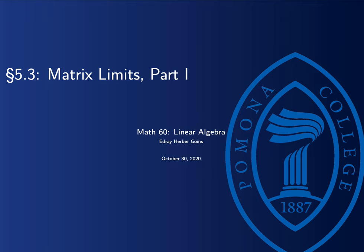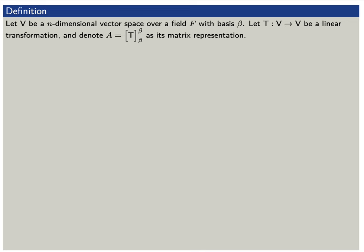Today we're going to have the first in a two-part series on matrix limits, but first let's review the concepts of multiplicity of eigenvalues. Let's say that v is a vector space with some basis beta. Let t be a linear transformation from v to v, and let a be its matrix representation with respect to this basis beta.